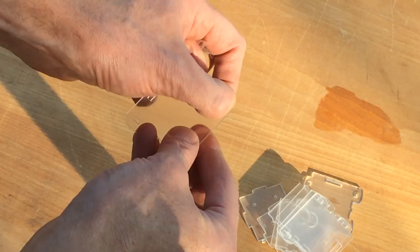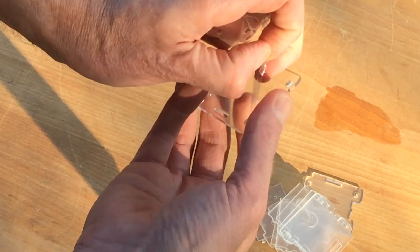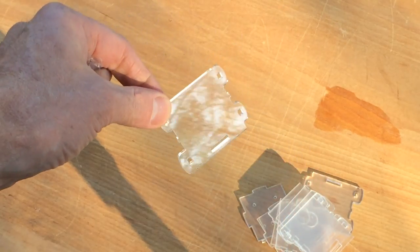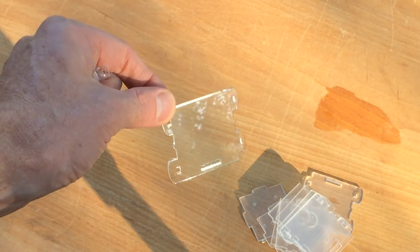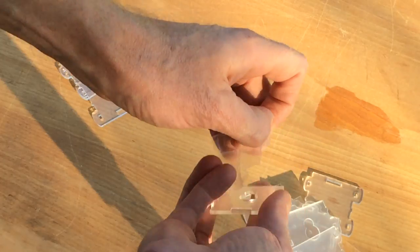Begin assembly by removing the thin plastic backing from both sides of each acrylic panel. This is a side panel with a side panel profile.